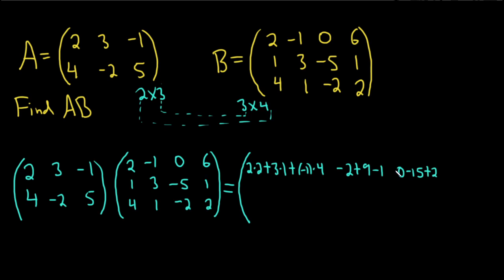The last entry in the first row is first row, fourth column. We use the first row and the fourth column: 2 times 6 is 12, plus 3 times 1 is 3, plus negative 1 times 2 is negative 2.